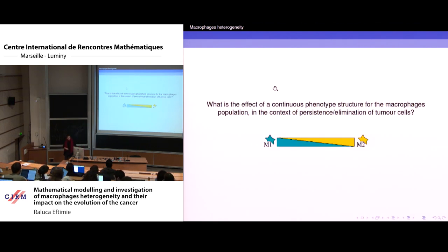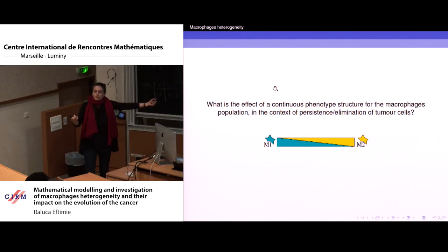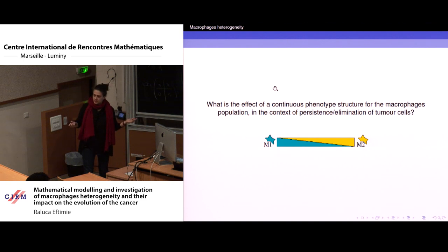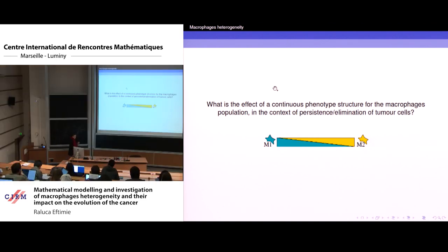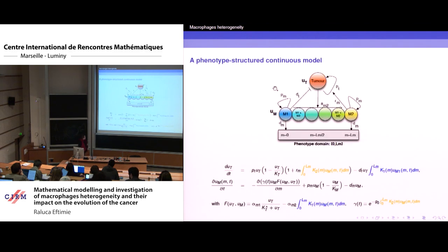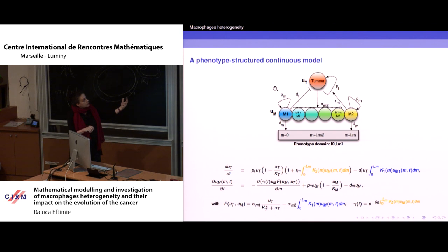Now the question is: we have this simple ODE model with distinct populations, but macrophages are actually part of a continuum with different states. So let's see how to incorporate this into a mathematical model. Instead of focusing on only M1 cells and M2 cells, I'll assume there are cells with different phenotypes between the two extremes.